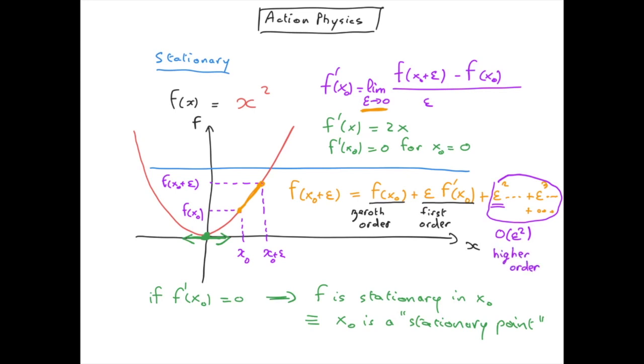It is important to notice that in order to characterize the stationarity of a function, we only look at the first order. For instance, if we are at a stationary point in x0, so f prime of x0 is zero,